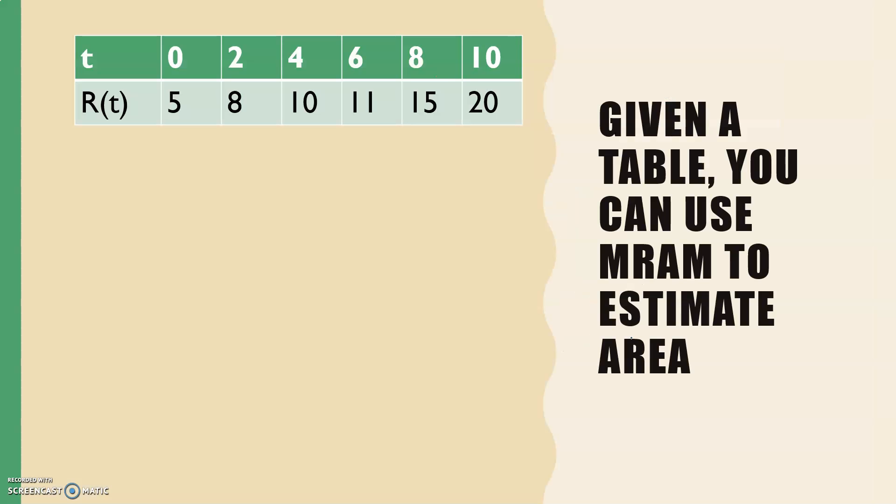Okay, we can also use MRAM in a table. When you use MRAM in a table though, we have to have a whole lot of information in the table that we're not making use of. So this would be one rectangle, and the midpoint of that rectangle would be t equals 2. And this would be the second rectangle, and the midpoint of that rectangle would be t equals 8. So if I were going to use MRAM for this problem, I would be doing a width of 4 times a height of 8, plus a width of 4 times the height of 15. With MRAM in a table, you're going to need a whole bunch of information that you're just not using. So this would be 32 plus 60, or 92.